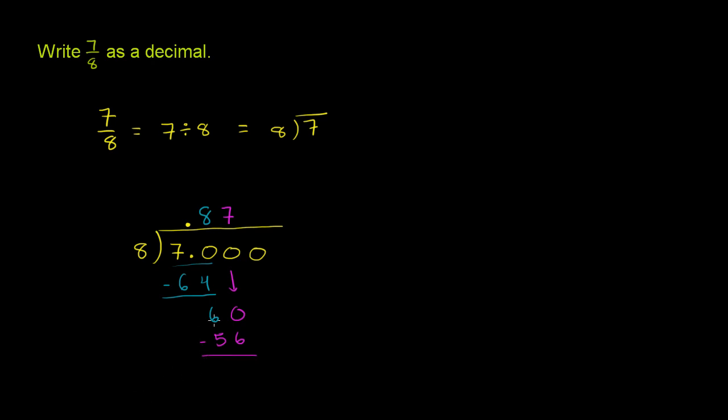And then we subtract again. 60 minus 56 is 4. And now we can bring down another 0 right over here. And 8 goes into 40, well, it goes into 40 exactly 5 times. 5 times 8 is 40. And we have nothing left over. And so we're done.